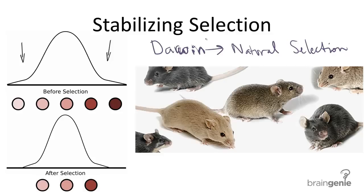One of the three ways in which natural selection can change populations is called stabilizing selection. It's a type of natural selection. Take a look at this bell curve illustrated on the left side of the screen.